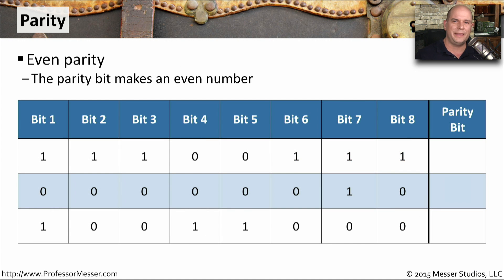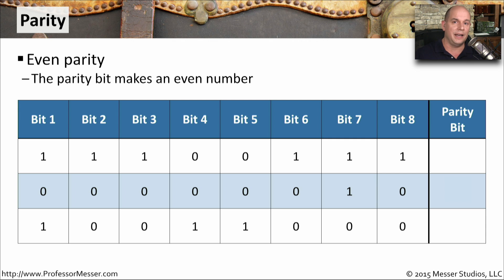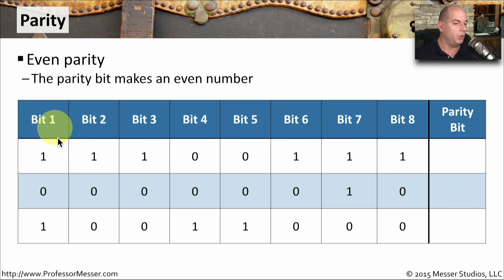A lot of people have asked what the parity bit really means, so here's a diagram to show how parity works inside a computer. Parity bits inside memory are usually even parity, meaning the parity bit makes an even number of ones across all the bits. Take the first byte as an example — a byte is eight bits. The bits one through eight are 1, 1, 1, 0, 0, 1, 1, 1.